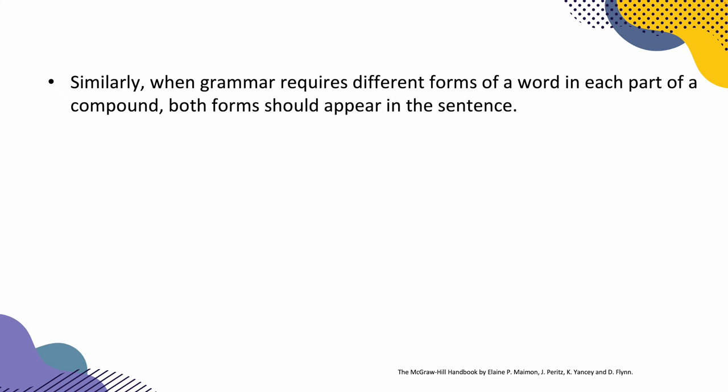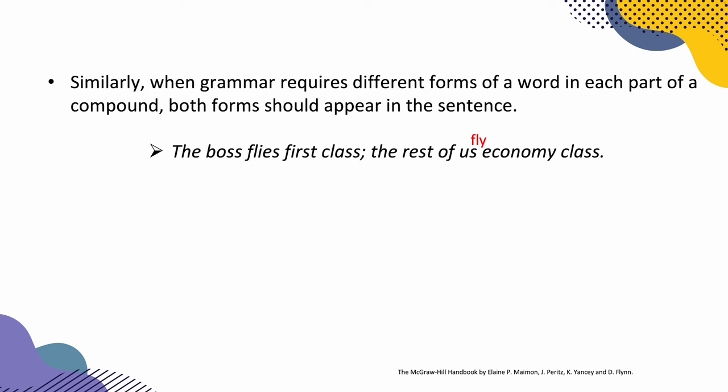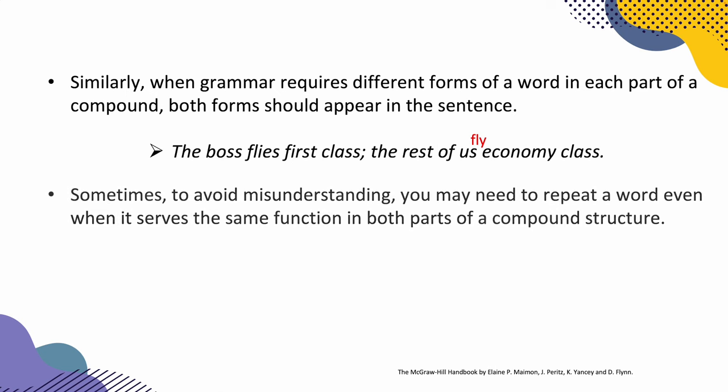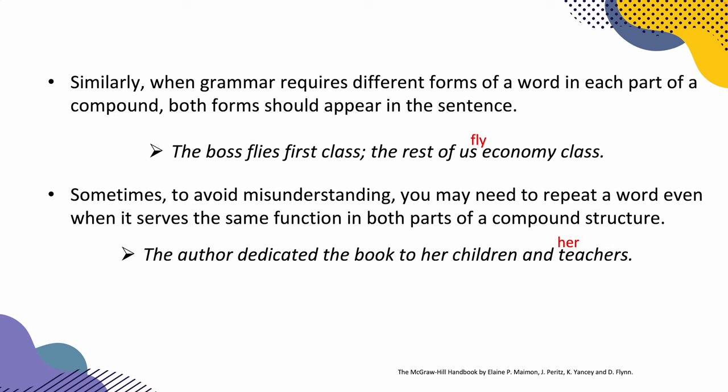Similarly, when grammar requires different forms of a word in each part of a compound, both forms should appear in the sentence. 'The boss flies first class. The rest of us economy class.' It is better to add the verb in the second clause: 'The boss flies first class. The rest of us fly economy class.' Sometimes, to avoid misunderstanding, you may need to repeat a word even when it serves the same function in both parts of a compound structure. 'The author dedicated the book to the children and teachers' — if you add the possessive adjective, it's better: 'the author dedicated the book to her children and her teachers.'